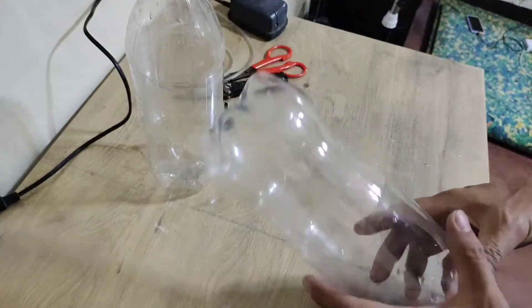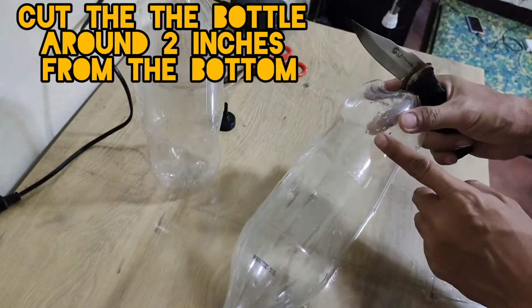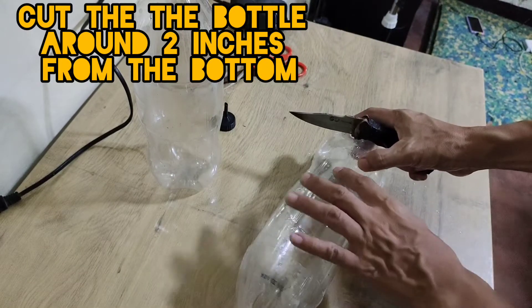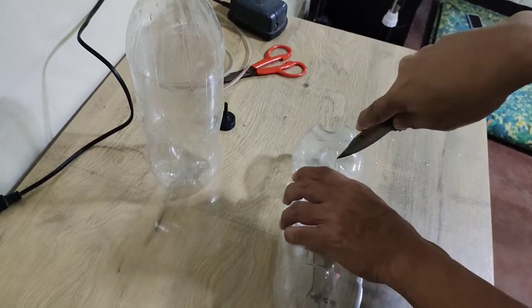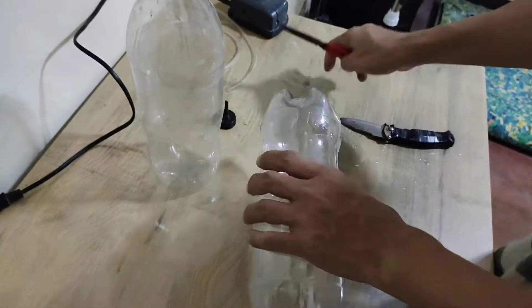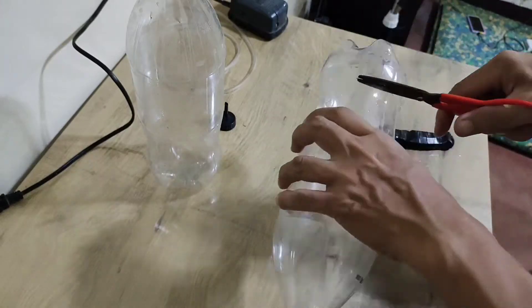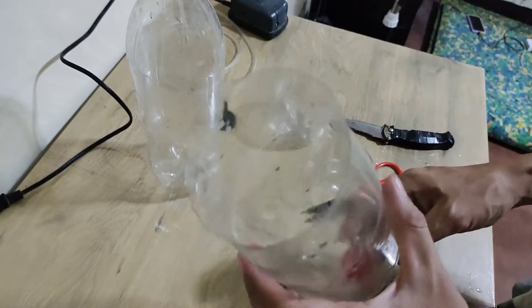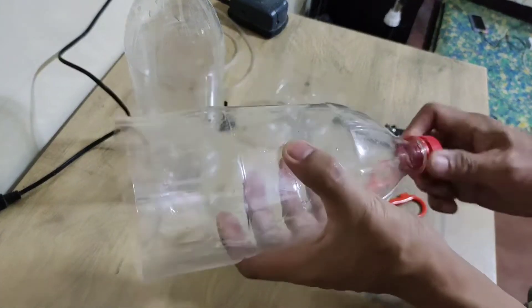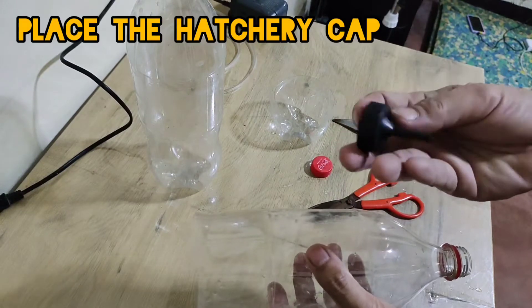Then we need to make an opening by cutting the bottom part around two inches from the bottom. Then replace the cap with this special hatchery cap.